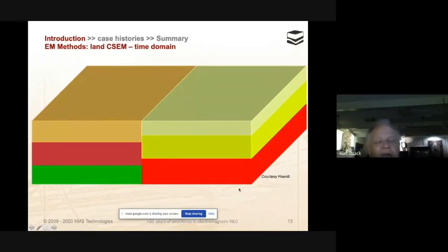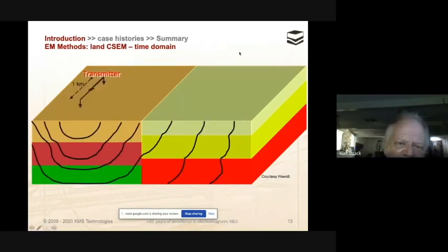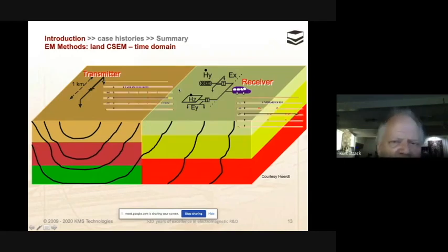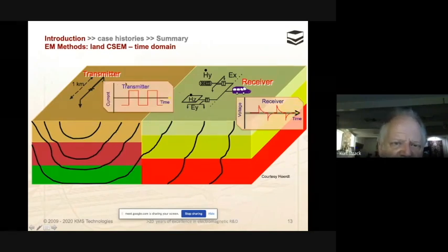For controlled source, we bring our own source. We inject our own field. We have a grounded dipole that injects a current. The current flows from one end to the other. It goes downwards and outwards with increasing time. The propagation downwards comes from the transmitter. The outwards propagation comes from the layer interface. As soon as the electromagnetic waves hit a layer interface, the electromagnetic field goes outwards. You then have a receiver, and each of the components can give you the full information of the resistivity of the subsurface. So you take multi-components, and you get redundant information.